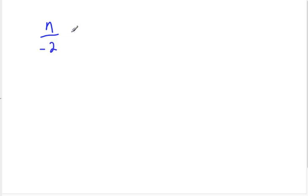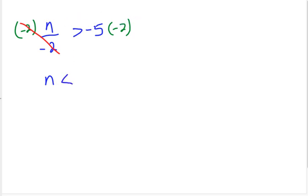Let's do n divided by negative 2 is greater than negative 5. I'm going to multiply both sides by negative 2. I don't switch the sign yet — I'll switch it in the next step. The negative 2s cancel, giving us n. Since we're multiplying by a negative number, I switch the sign from greater than to less than. Then negative 5 times negative 2 is positive 10, so n is less than 10.